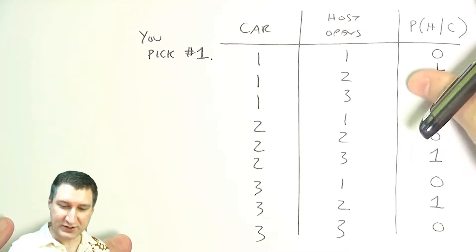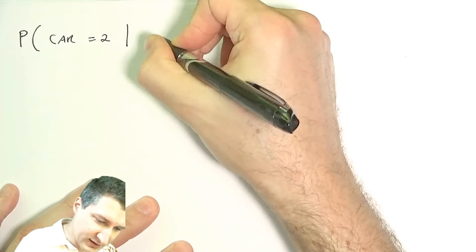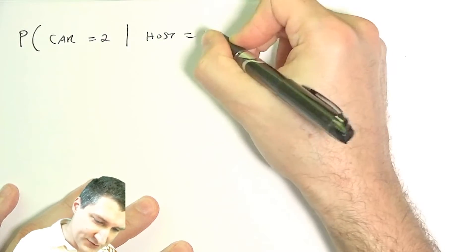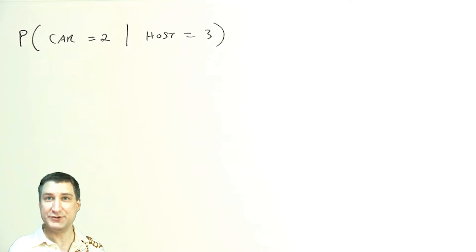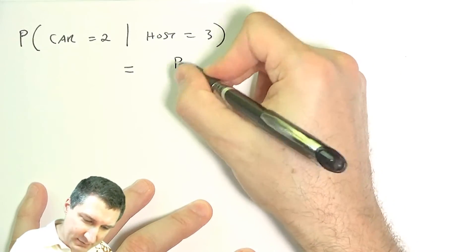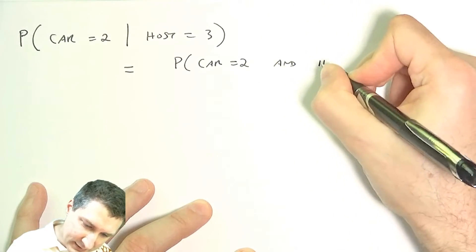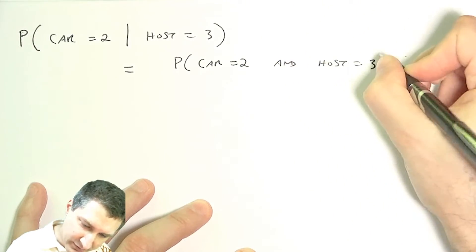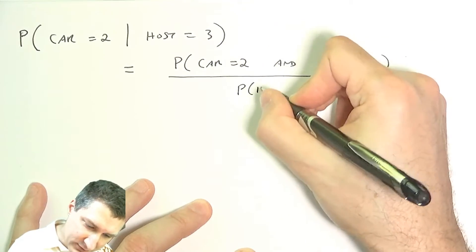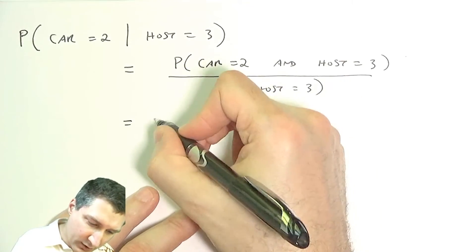So now let's compute what is the probability of car equals two given the host opens three. This is basically the answer of should you switch. If this number is greater than a half, then we should definitely switch. So we can figure out what this is by Bayes' rule. This is the probability that the car equals two and the host opened three over the probability that the host opened three.